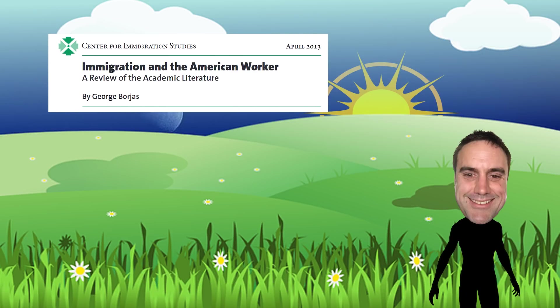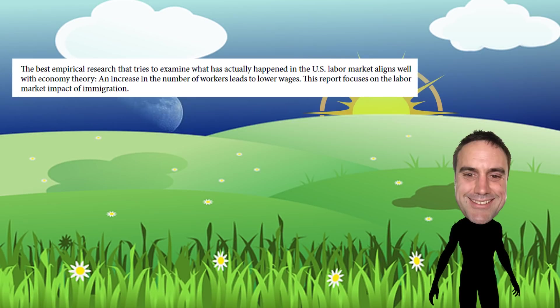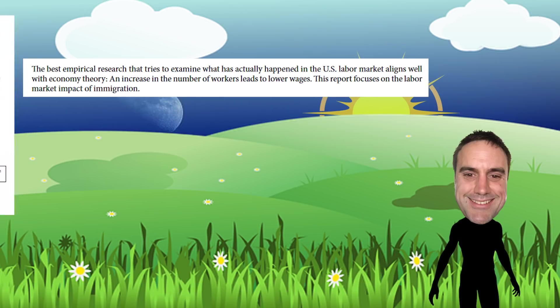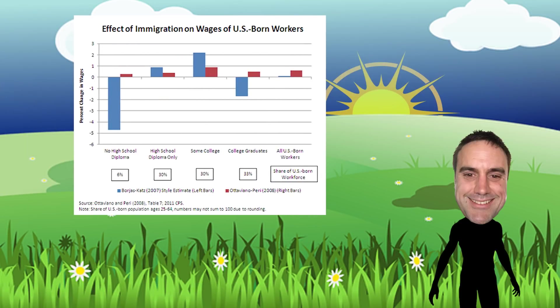In 2013, George Borjas published research for the Centre of Immigration Studies in the United States. He found that the best empirical research examining what has actually happened in US labor markets aligns well with economic theory: an increase in the number of workers leads to lower wages. Another US study found wages of highly skilled workers were essentially unaffected, but low-skilled workers saw big decreases. This is what you'd expect if you flood the nation with low-skilled migrants, as the US has.